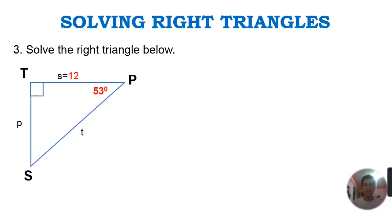Okay, so in this last example, number 3, solve the right triangle below. So we have right triangle S, T, and P, and we are provided with the measurements where S is equal to 12, and then we have one angle. So angle P is 53 degrees.